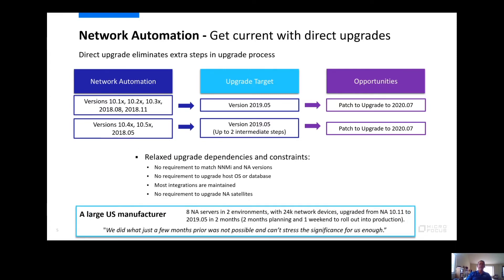The same is true for Network Automation. Versions 10.1, 10.2, 10.3, 2018.08, and 2018.11 support a direct upgrade to 2019.05, and then a patch upgrade to 2020.07. We've got a few versions that have issues requiring an intermediate step, but the important piece is that you get to 2019.05 so you can get all the new capabilities, all that new quality, and then eventually just patch upgrade to 2020.07.